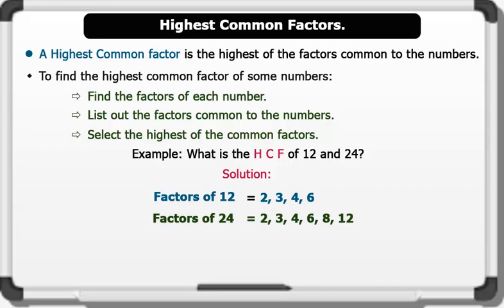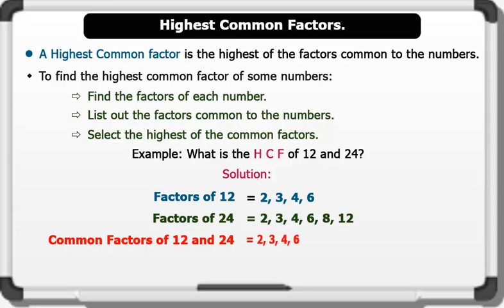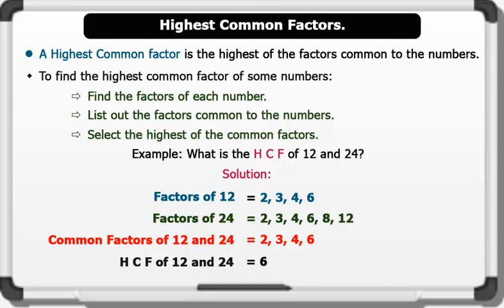Now let's list the common factors. The common factors of 12 and 24 are 2, 3, 4, and 6. Let's now select the highest common factor. The HCF of 12 and 24 is 6. That's brilliant.